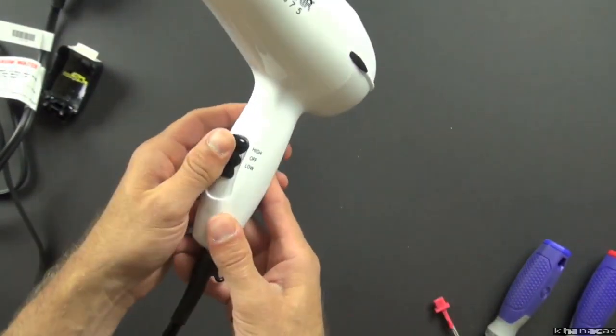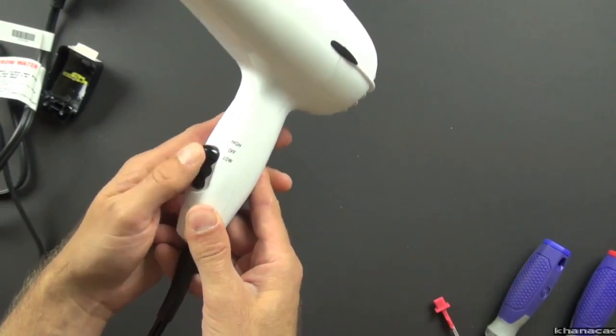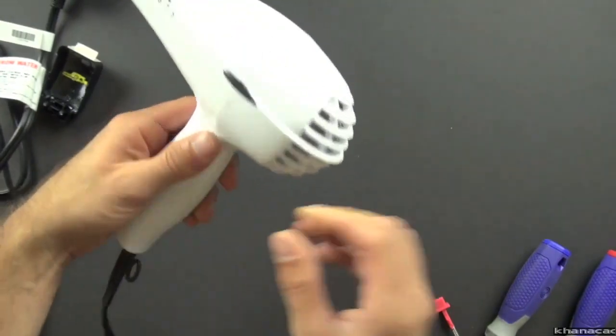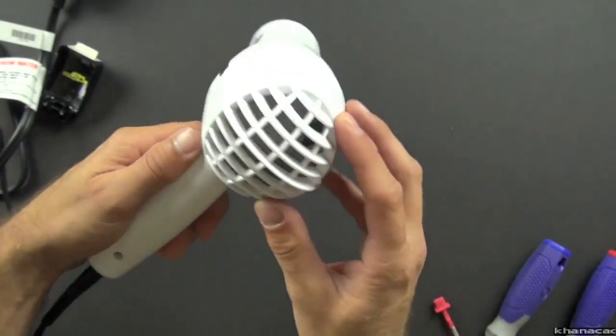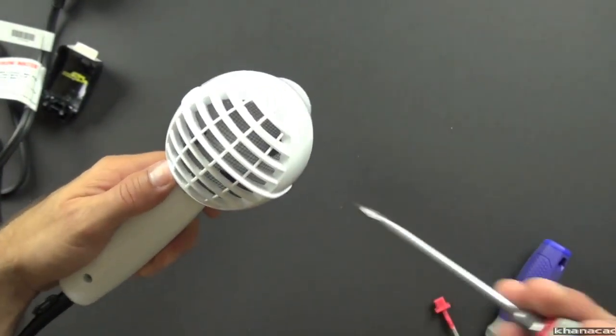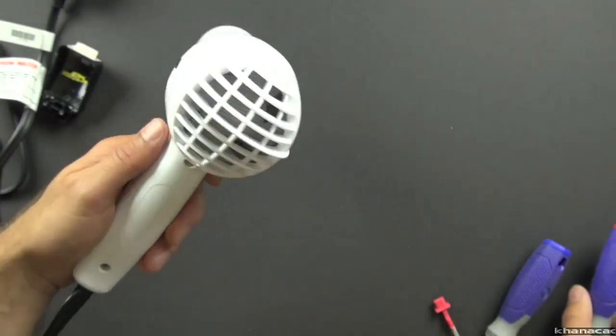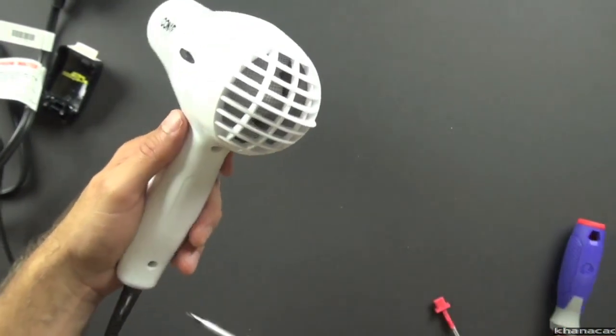And then we have our switch, so this allows us to turn the power high, low, and off. And we have these little molded patterns here, and then our funnel that funnels the air through. And you can see there's a screen on the back, and that helps to keep things out. So let's take a look at what's inside.